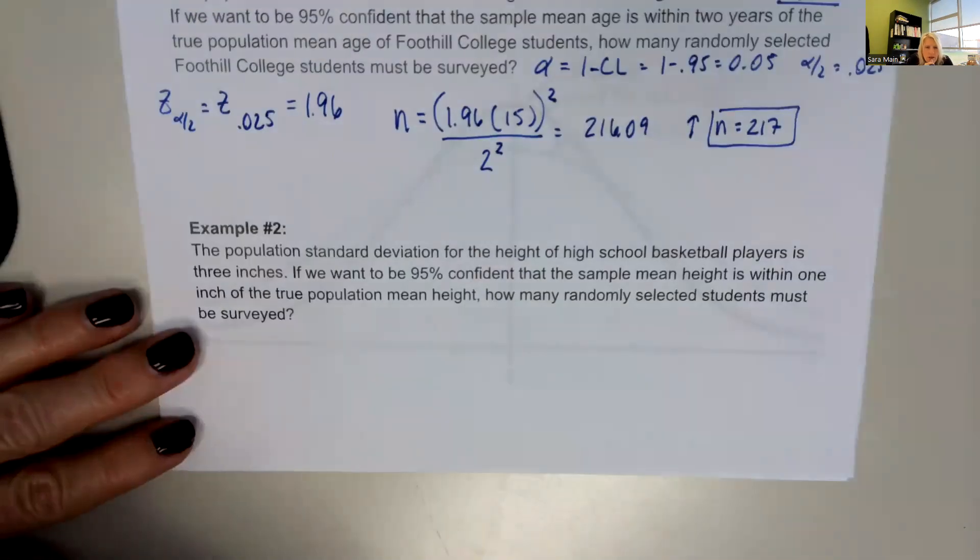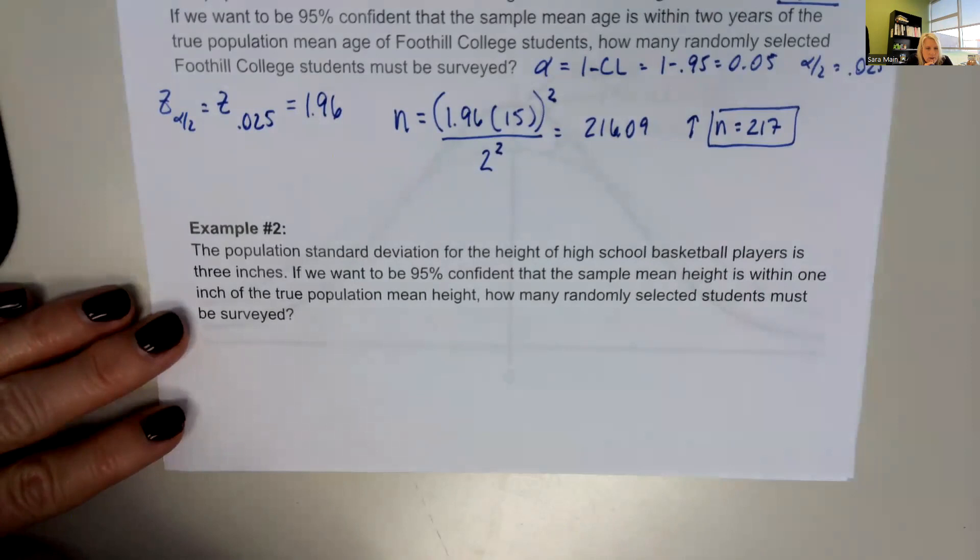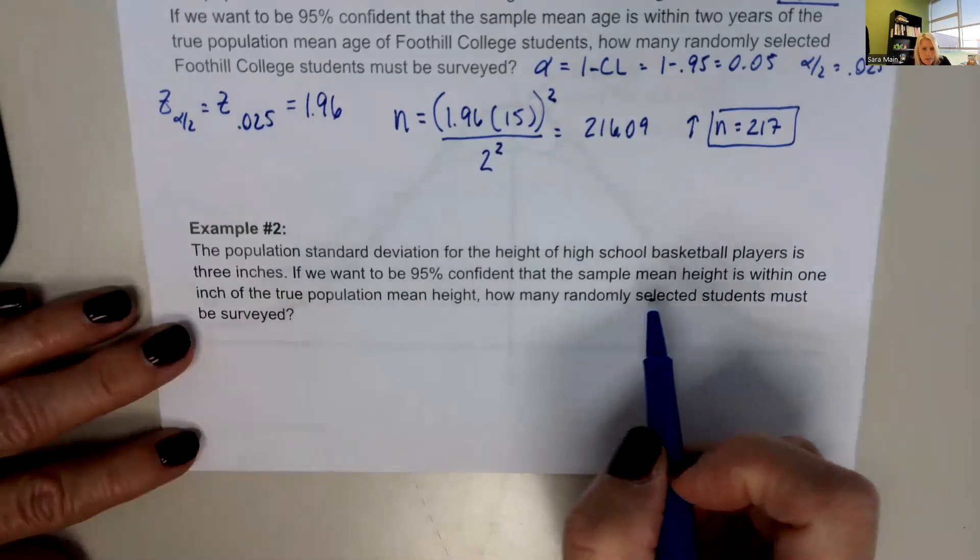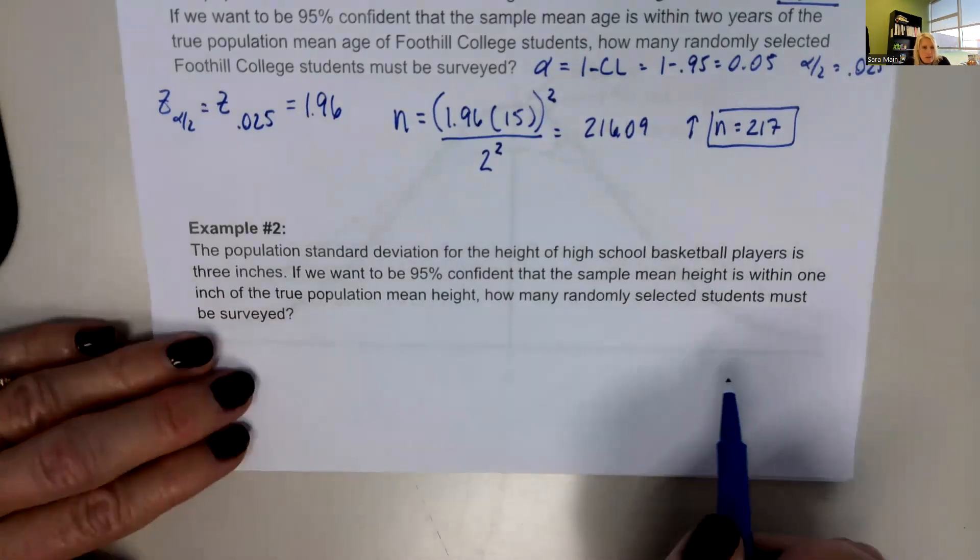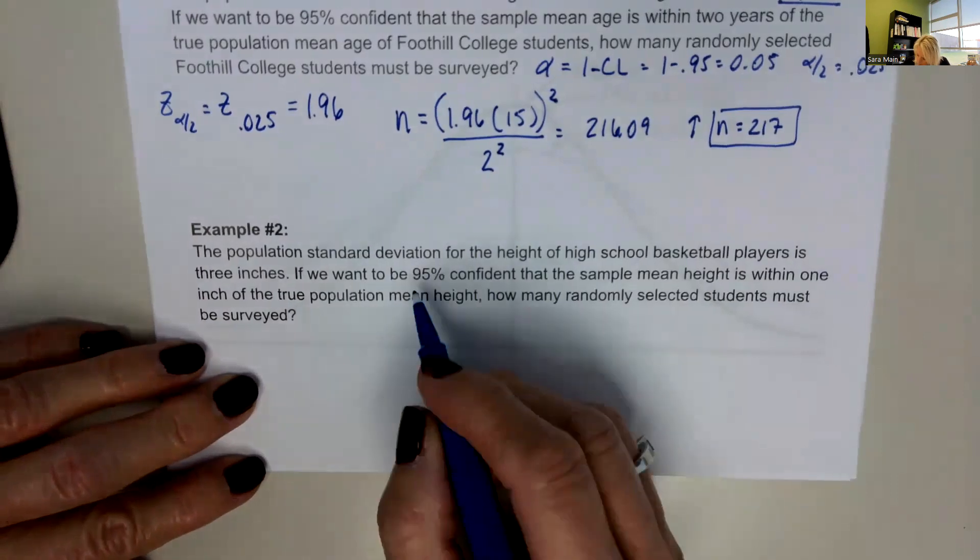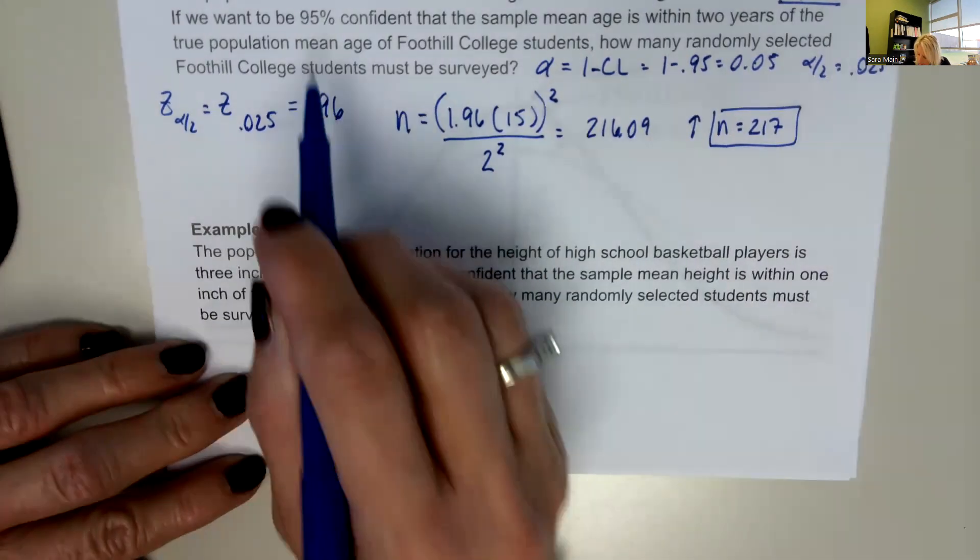Population standard deviation for the height of high school basketball players is 3 inches. If we want to be 95% confident that the sample mean height is within one inch of the true population height, how many randomly selected students must be surveyed? So we have the same confidence we had up here.